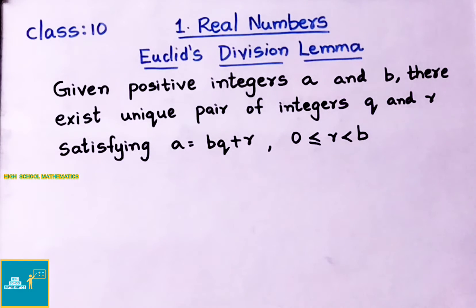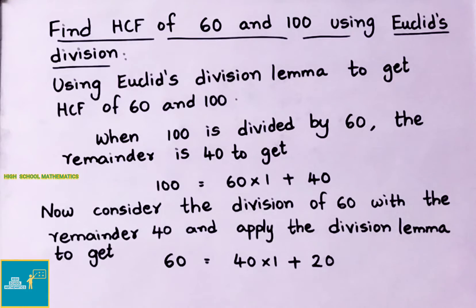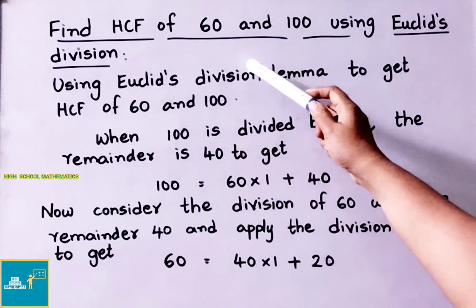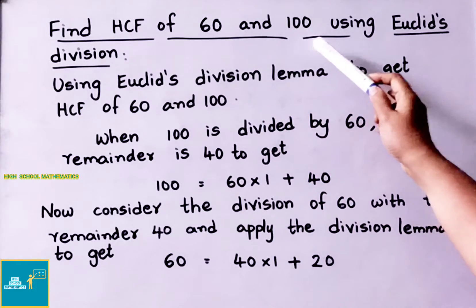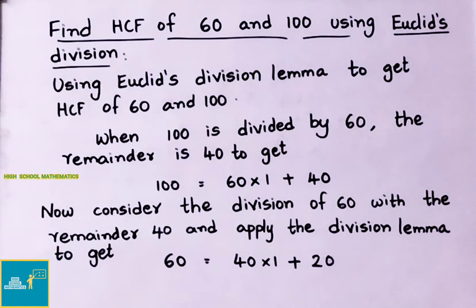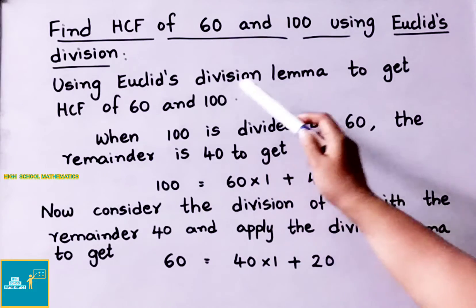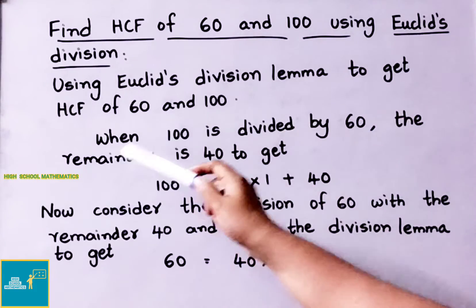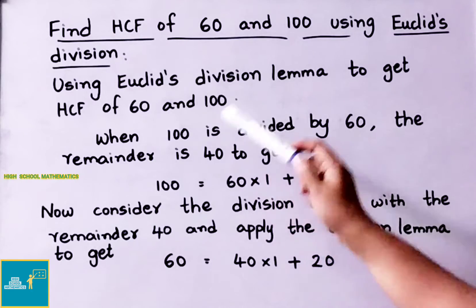Now let us see how to find the HCF of two numbers using this Division Lemma. Find the HCF of 60 and 100 using Euclid's Division Lemma.